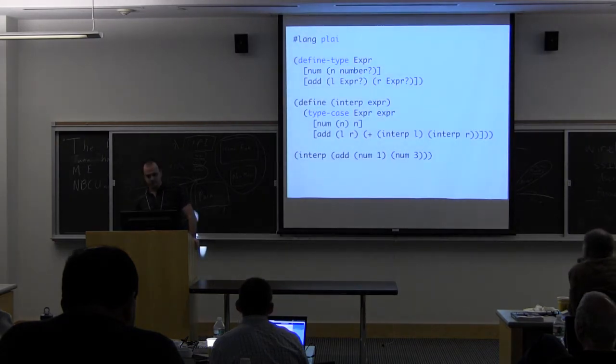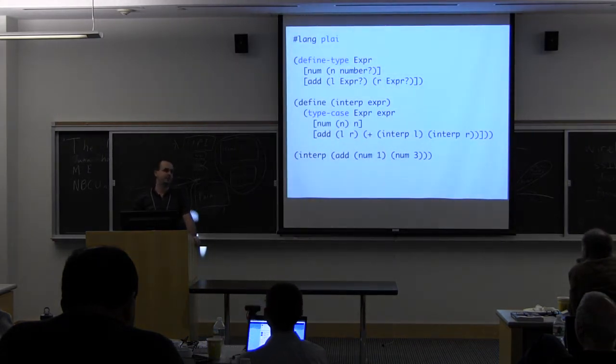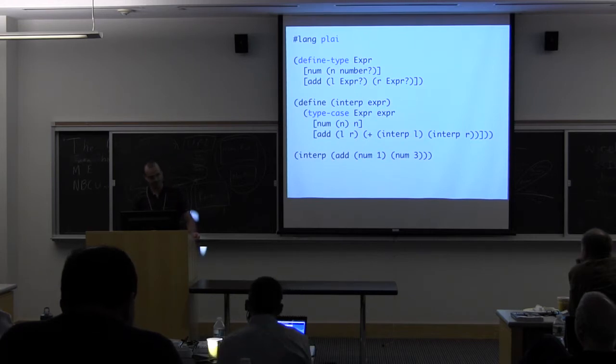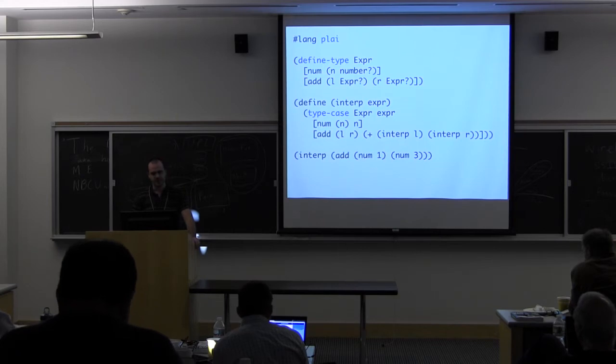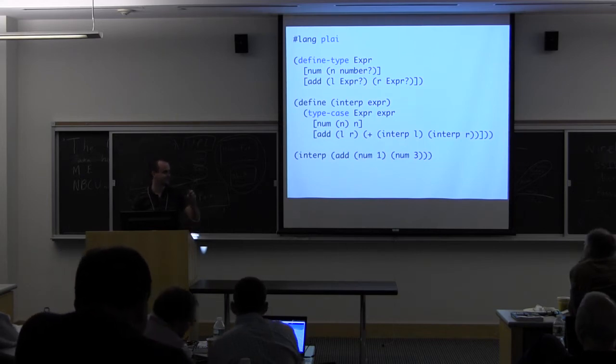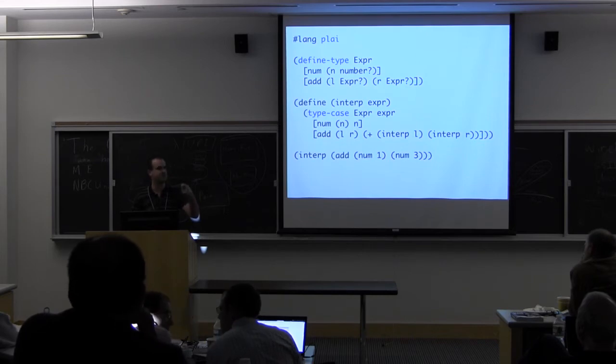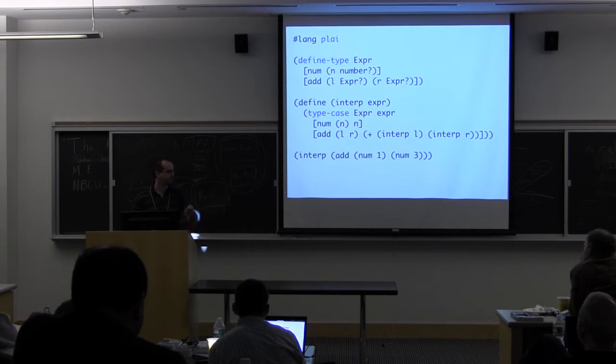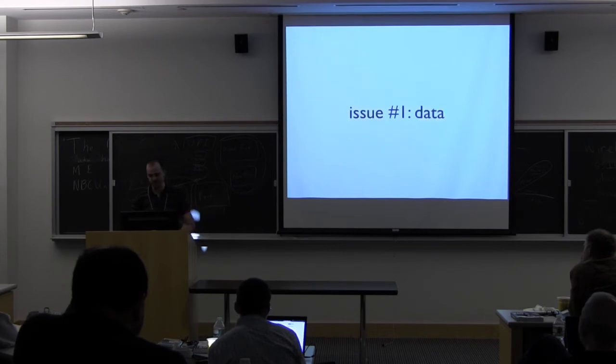Okay, so for those who don't know Hashlang PLAI with an I at the end, it basically provides defined type and type case for defining structures with variants and to do pattern matching on the structures. So I'm not going to say anything really deep in this talk. It's really just about tweaking some details that we figure out after teaching these courses like 10 times to ease the presentation.